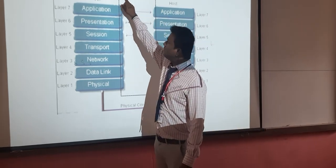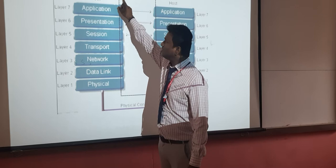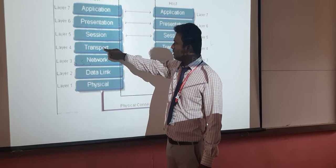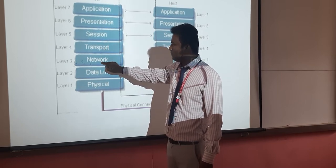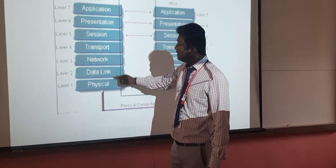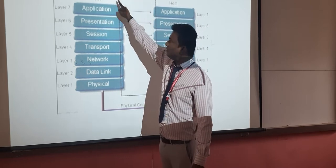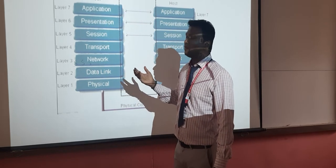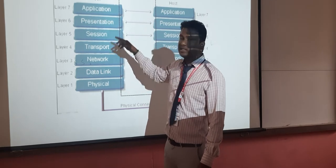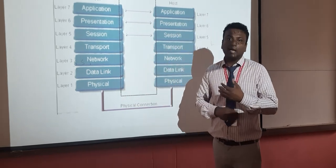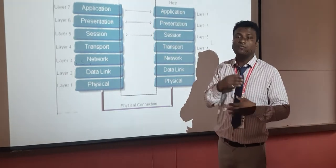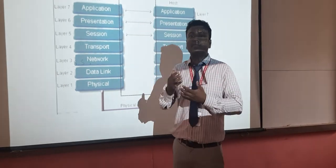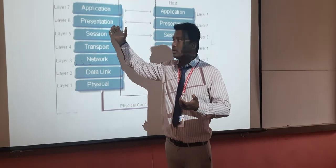The data flow moves in this direction: a user sends a mail, which goes from application to presentation, presentation to session, session to transport, transport to network, network to data link, data link to physical. The presentation layer handles which format the data should be given to the user — image format or otherwise. The session layer establishes the session with the user.